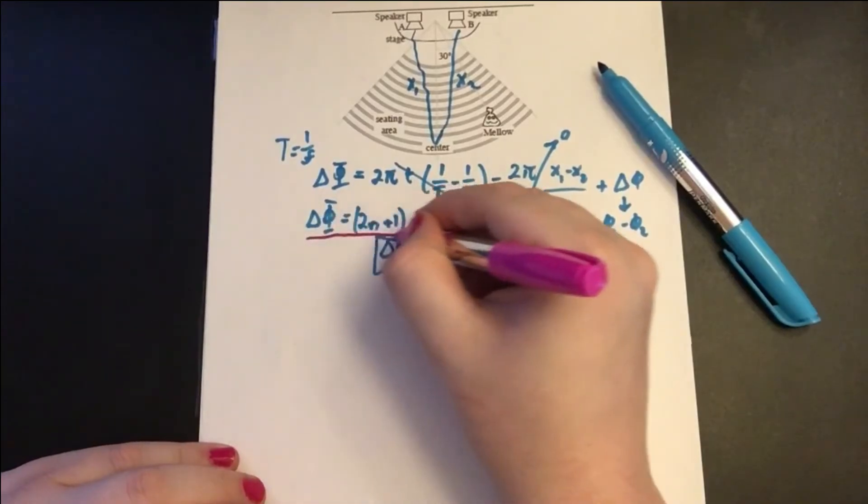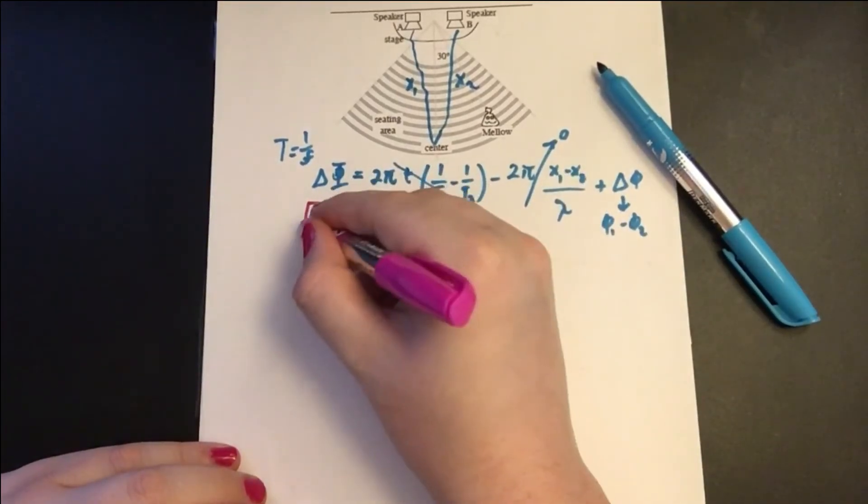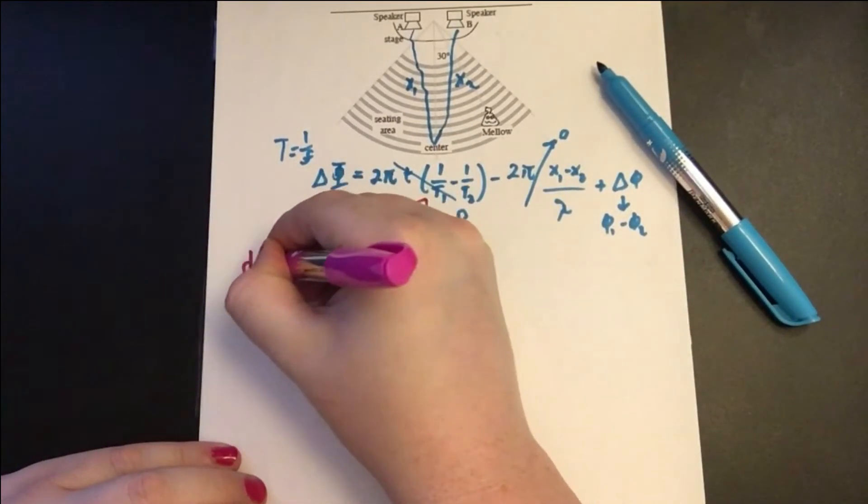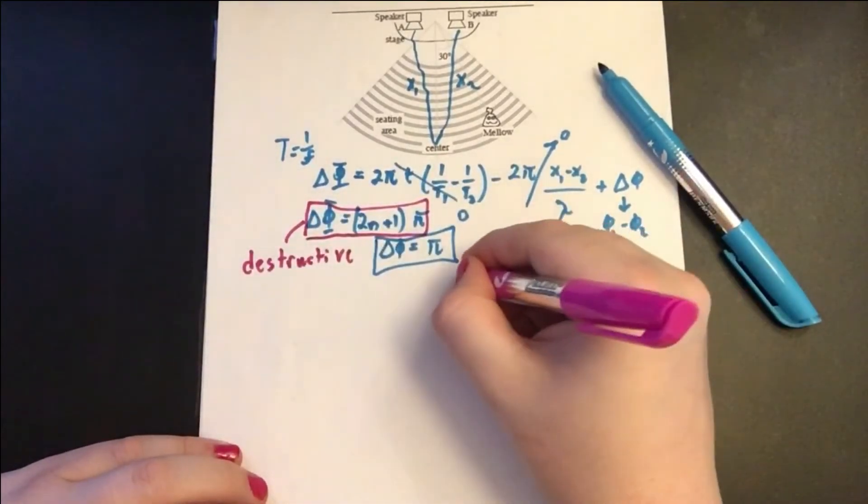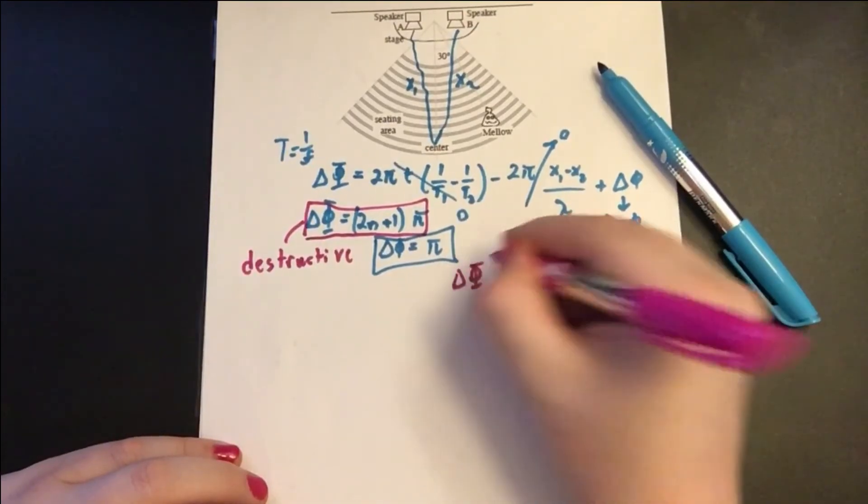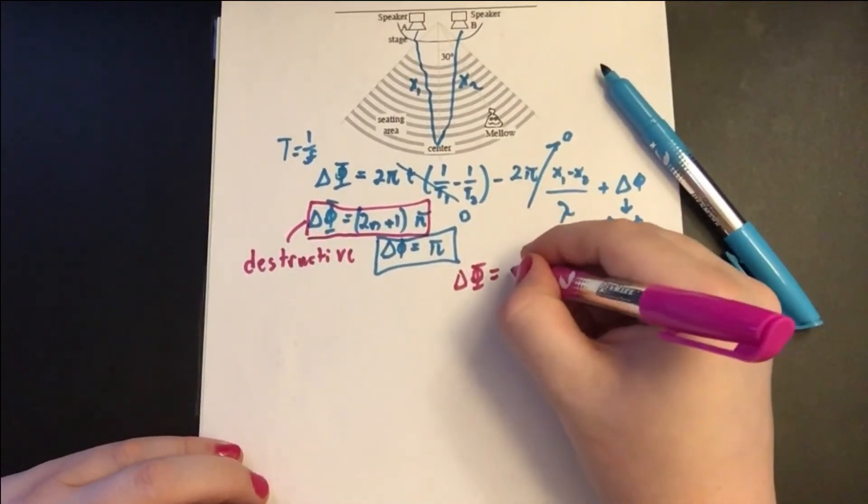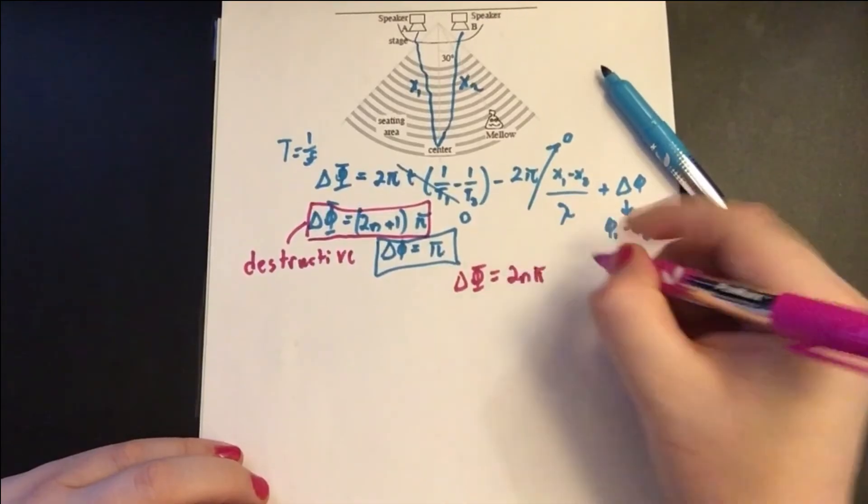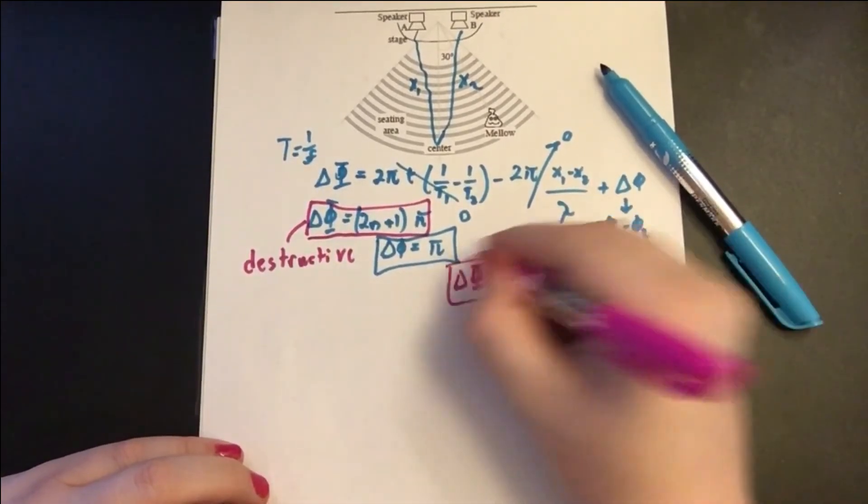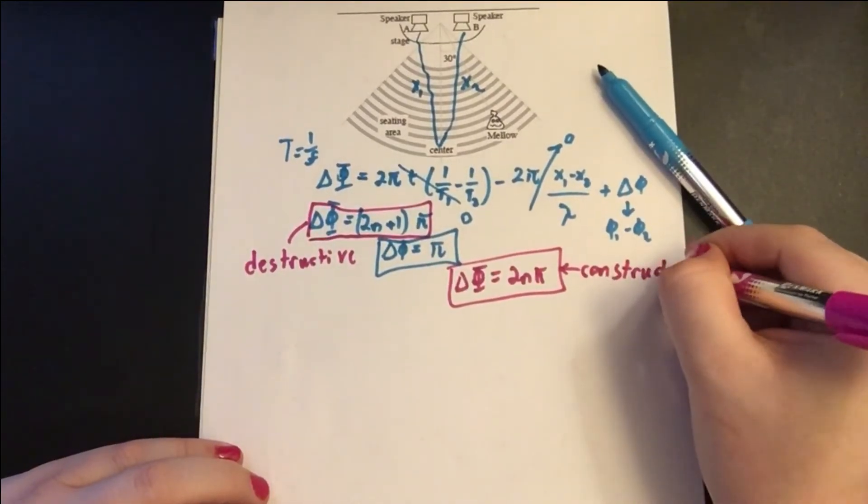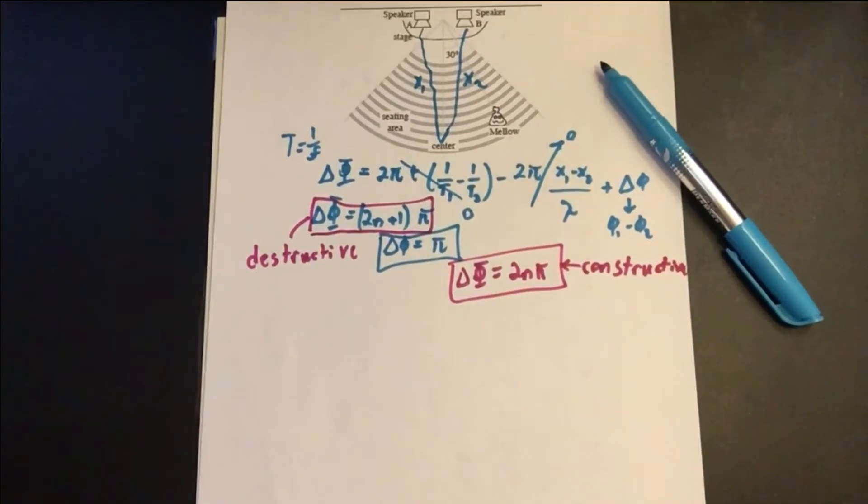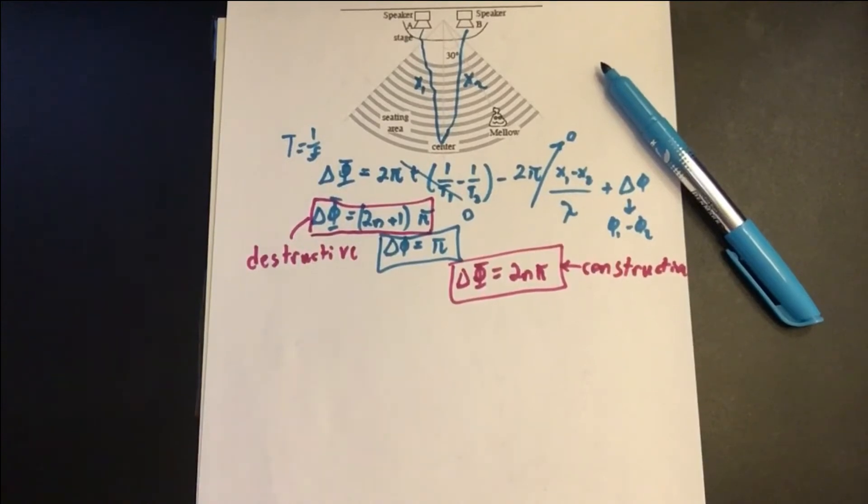As we said before, this is destructive interference. Δφ equals (2n+1)π is destructive. Δφ equals 2nπ is constructive. And everything else is partial. Okay, so using that information, what do we know?